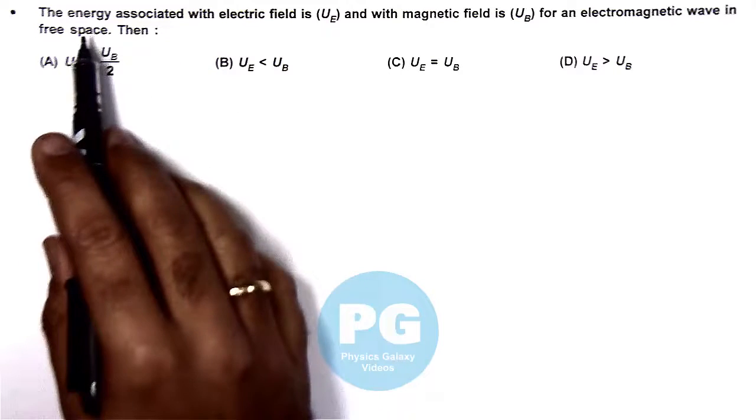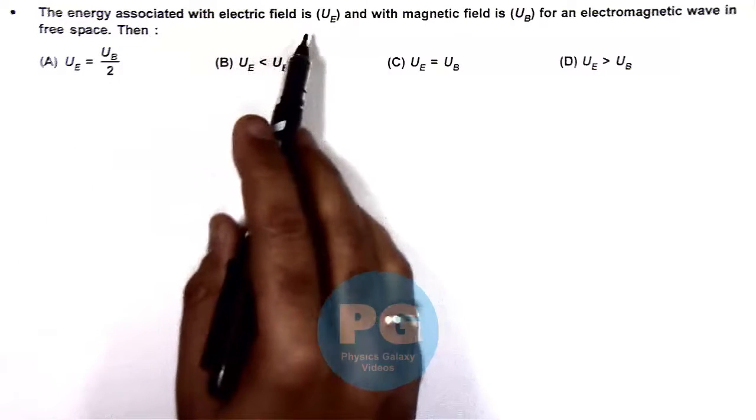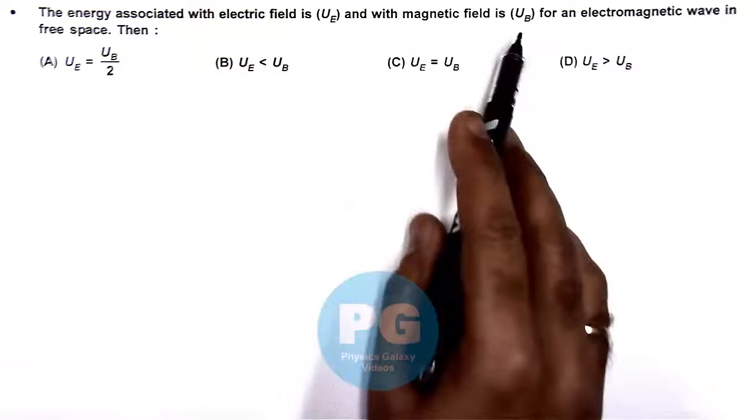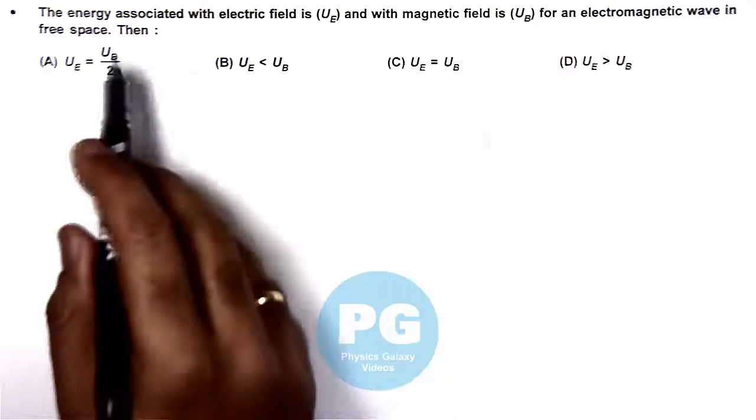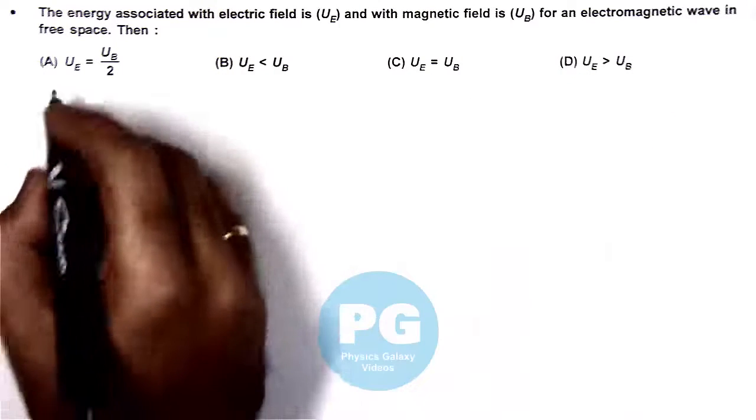In this question, the energy associated with electric field is Ue and with magnetic field is Ub for an electromagnetic wave in free space. Then we need to compare Ue and Ub.